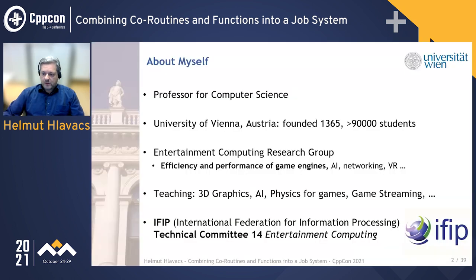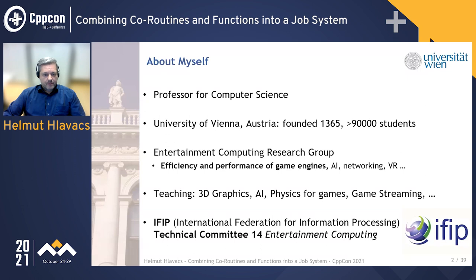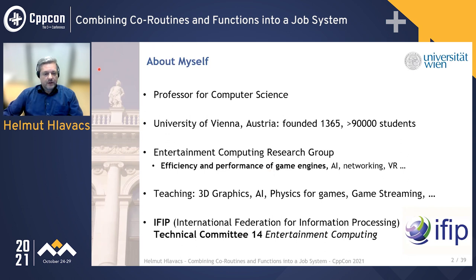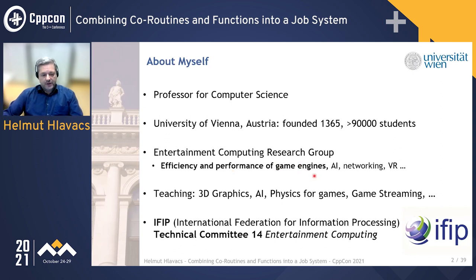A couple of words about myself. I'm a professor for computer science and I work at the University of Vienna, which was founded in 1365 — so it's fairly old. We have about 90,000 students. I head a group called the Entertainment Computing Research Group, and we do research in the areas of efficiency and performance of game engines, artificial intelligence for games, networking for games, and so on.